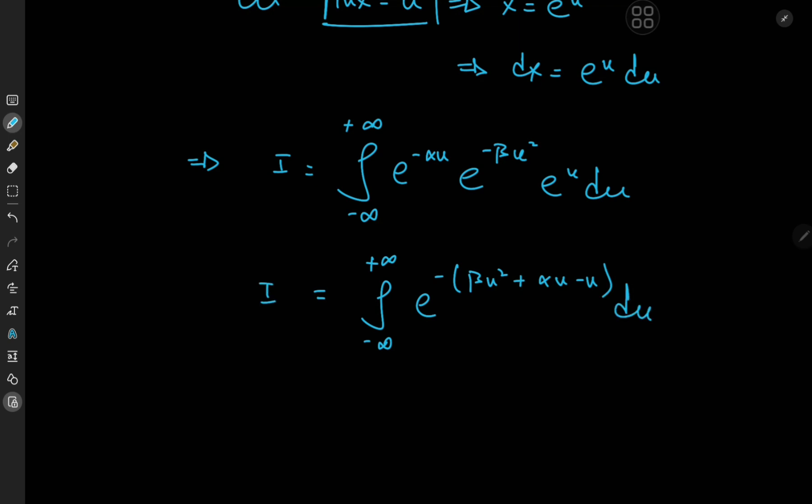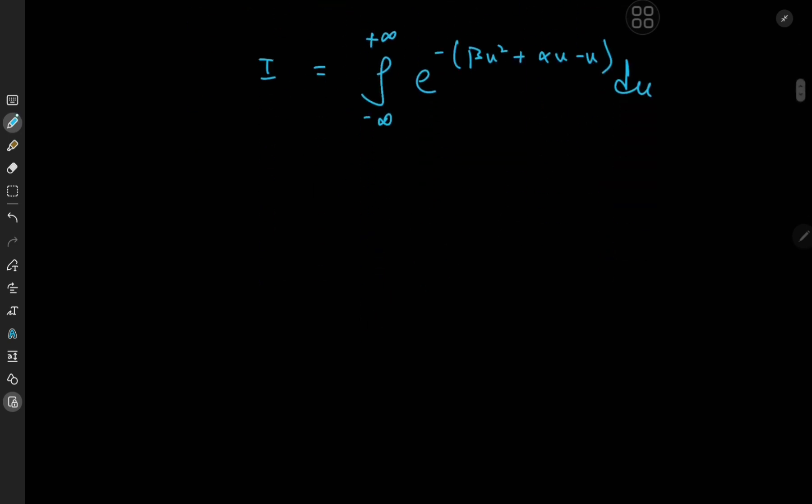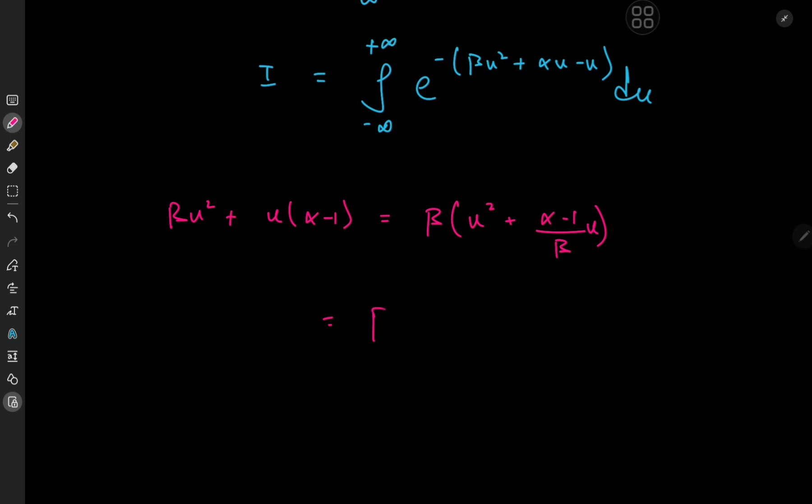And now for the argument of the exponential function, we could perform a completing square route. So we have beta u squared plus u times alpha minus 1, u factored out, equal to, we'll factor out beta, and write this as u squared plus alpha minus 1 divided by beta times u. So this could be written as beta times u squared plus factor of 2. We have u and we need alpha minus 1 divided by 2 beta. So we'll add and subtract the square of that.